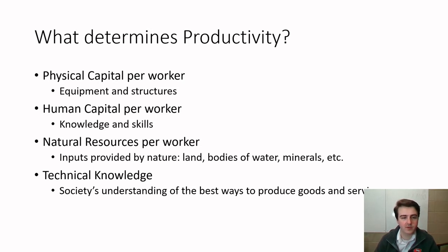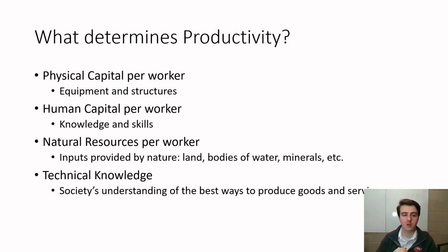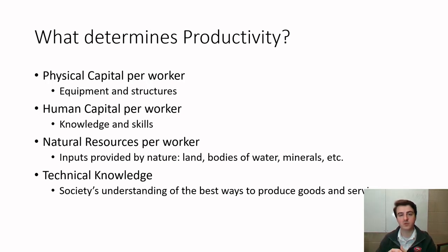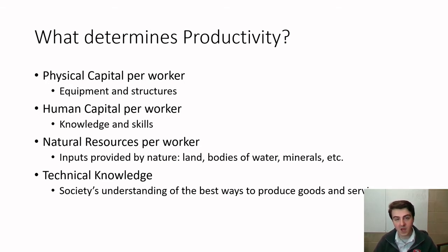What determines our productivity? Mankiw points to four big things. First, physical capital per worker — this is a huge one. How much stuff do we have to allow our workers to produce? Physical capital is the tools and resources we use in the production of goods: factories, equipment, structures. Some countries have an awful lot of physical capital built up over hundreds of years. America has an enormous amount of factories, grocery stores, tools, and structures to make workers more productive.